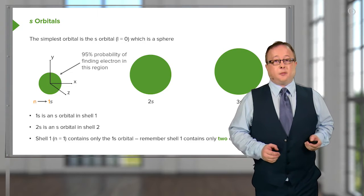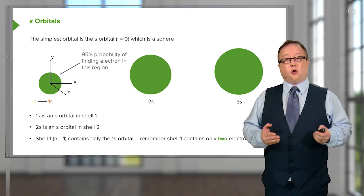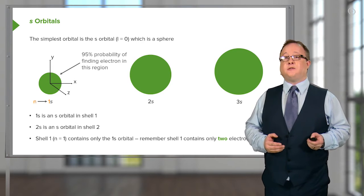The simplest orbital, as you can see here, is where L, or the orbital quantum number, is equal to 0. And it is spherical.